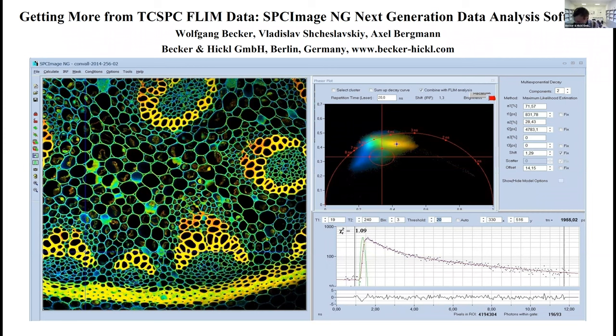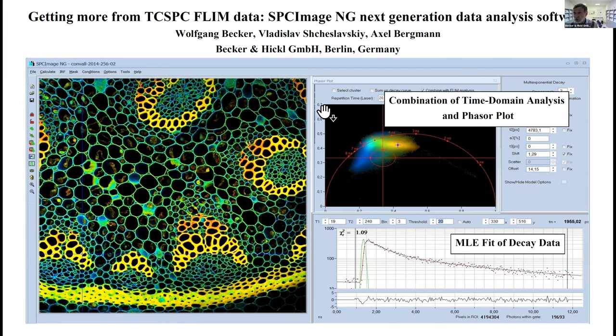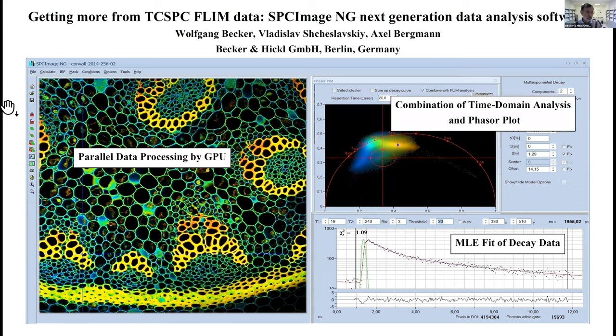Now the situation is a bit different because we have a new generation. It's the new generation of our software as a combination of time domain analysis and phasor plot. It uses maximum likelihood estimation of the decay data and runs parallel data processing on a GPU. So this all in all may not be a big leap for mankind, but it can be a big step for a FLIM user.